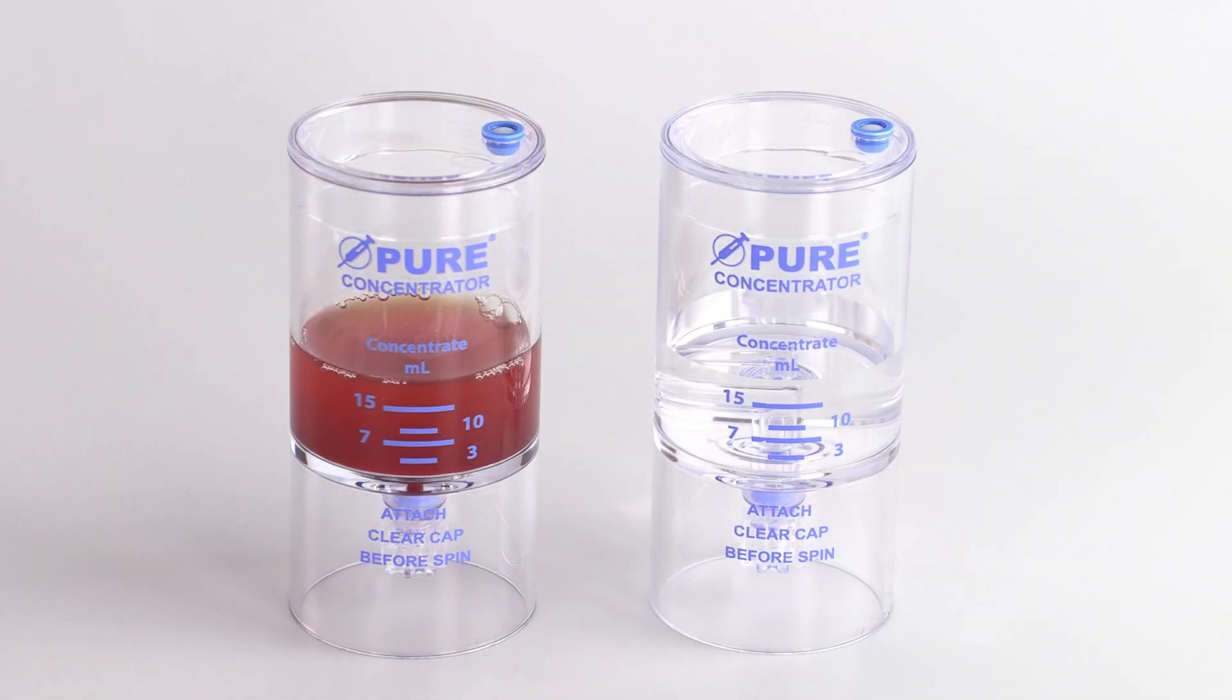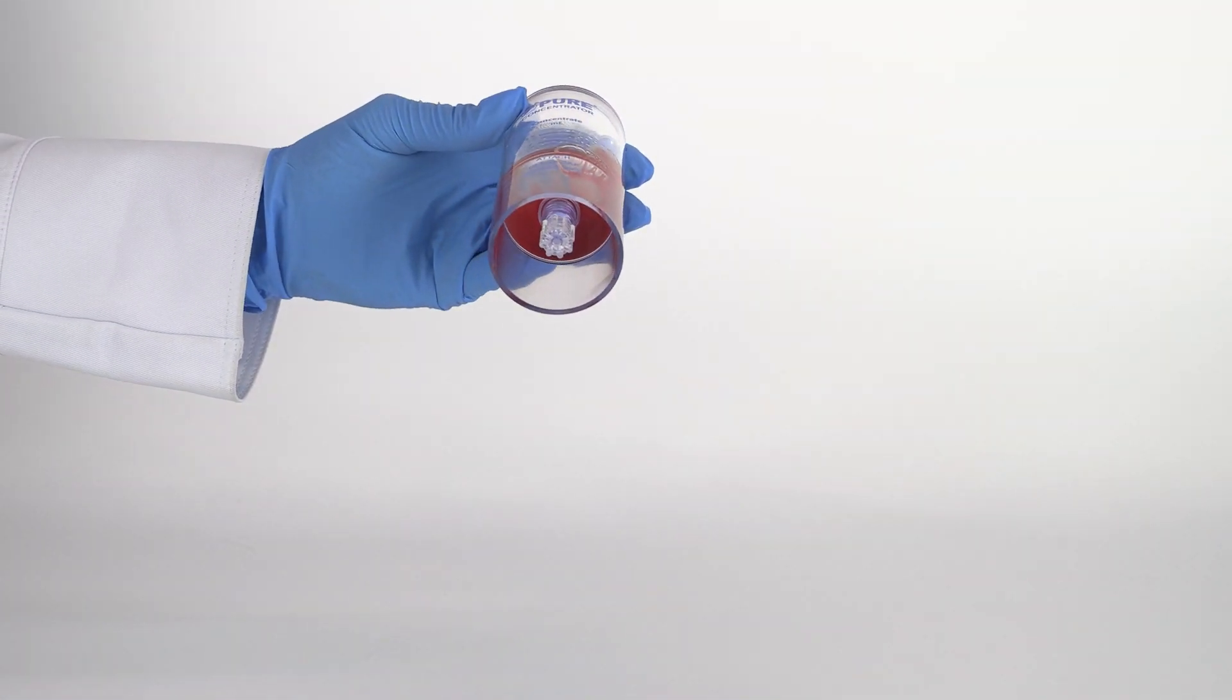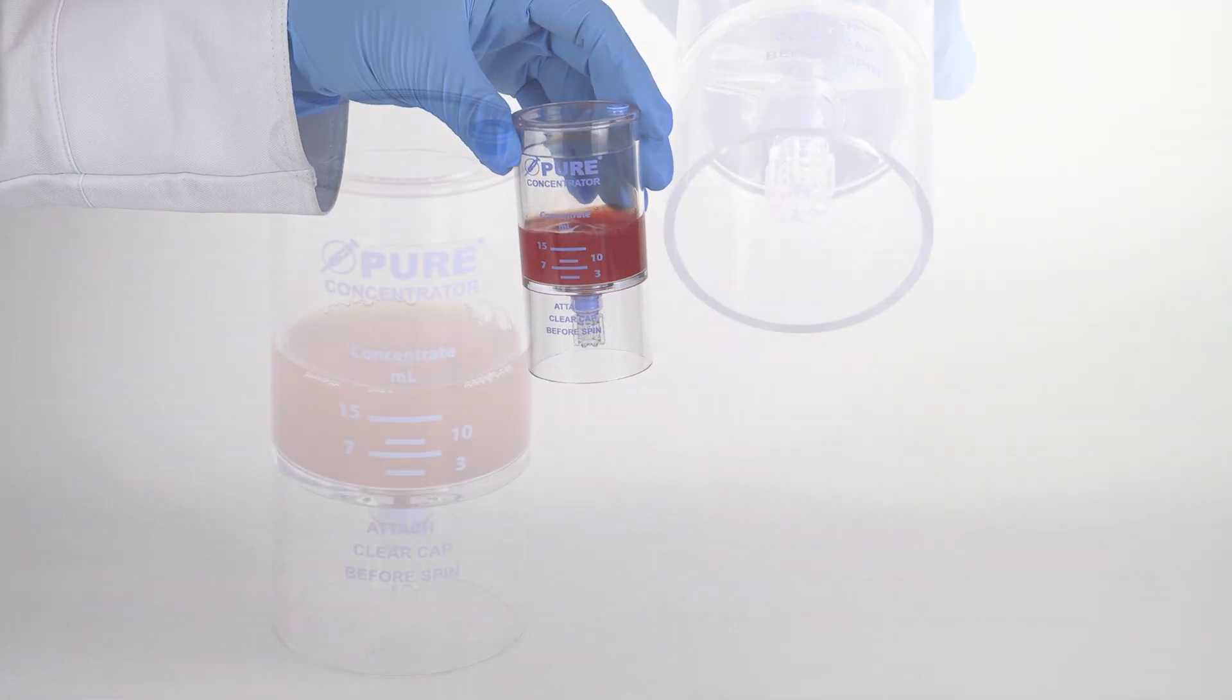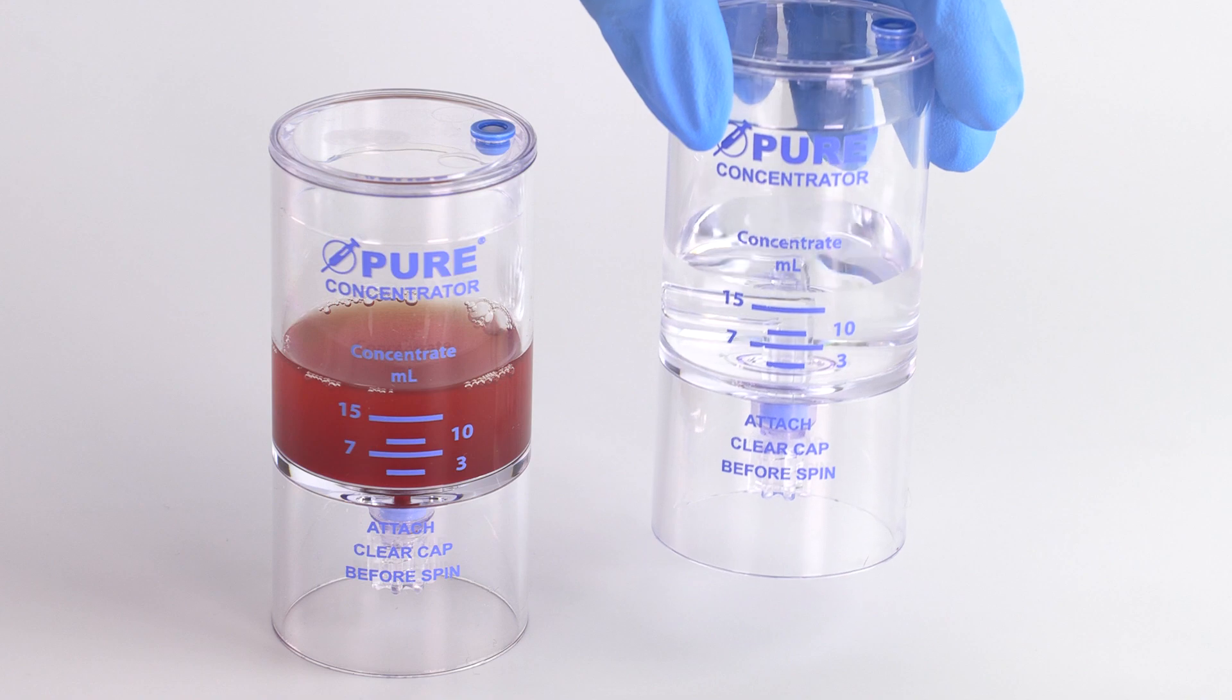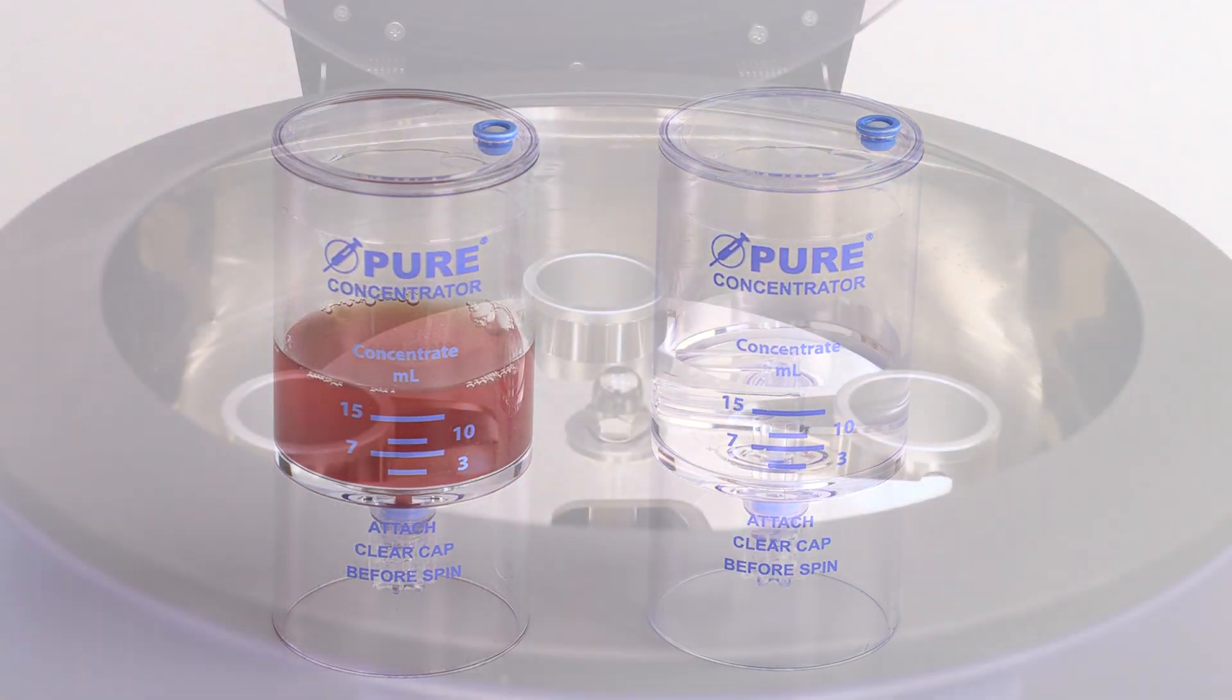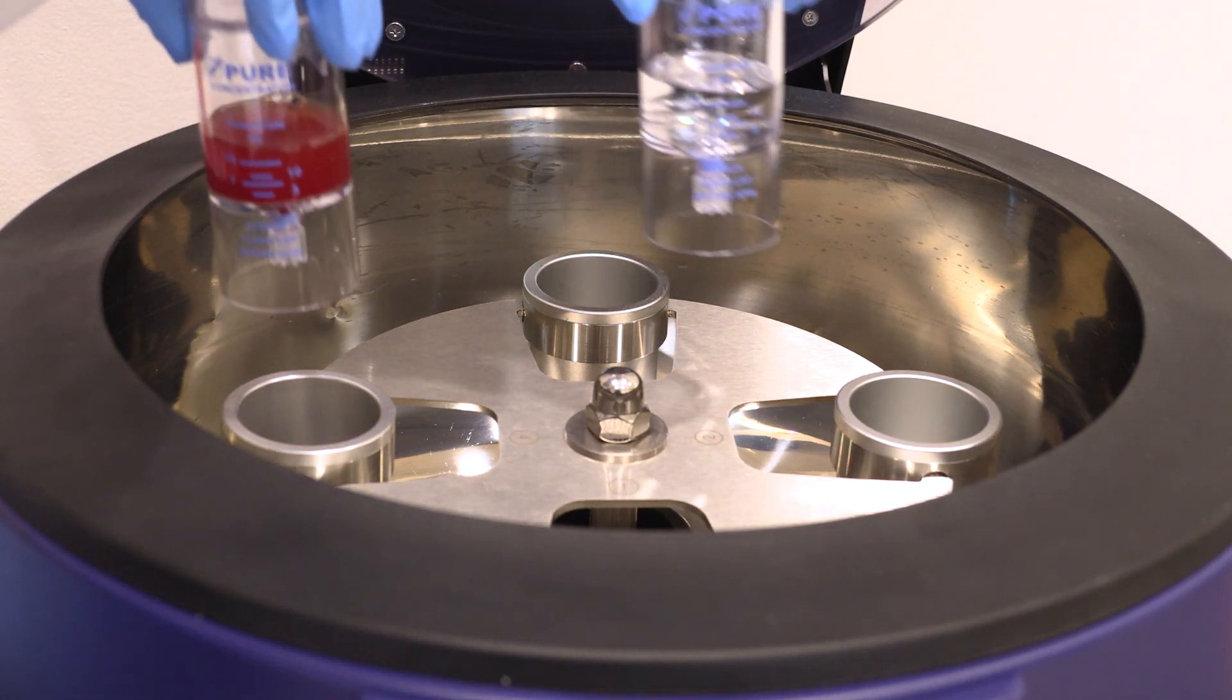Counterbalance the concentrator device with equal volume. Always attach the clear non-vented cap to the bottom port prior to centrifugation. Be sure to place the clear non-vented cap to the bottom port of the counterbalance device as well, and place back into the centrifuge rotor at opposite ends.